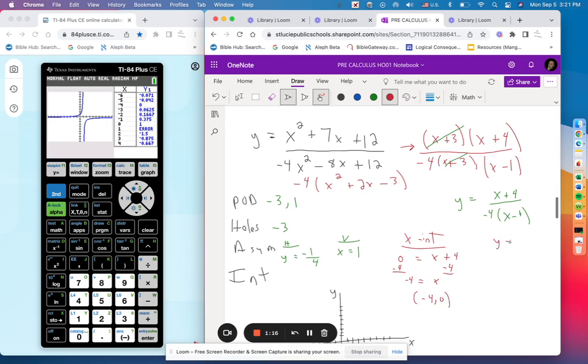My Y intercept - I'm going to plug a 0 in for X. So Y equals 0 plus 4 over - that's supposed to be negative 4 - negative 4 times 0 minus 1. So that's going to be 4 over negative 1 times negative 4 is negative 1 times 4, which is 1. So that's going to be 0, 1. And does it look like 0, 1? Yeah, it does from the graph.